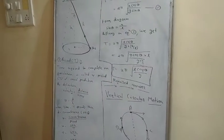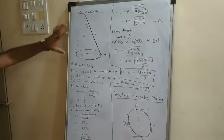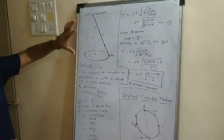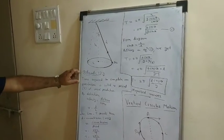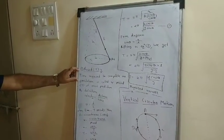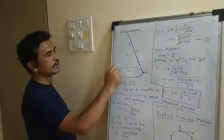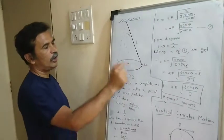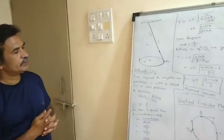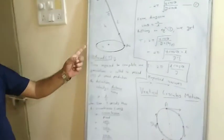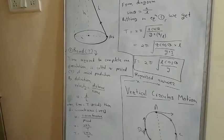Let us see how to prove the period of the conical pendulum. We require a diagram of the conical pendulum, which we have already drawn, so no need to draw it again. The period is defined as the time required to complete one circulation, one revolution, or one vibration — this is called the period of the conical pendulum.